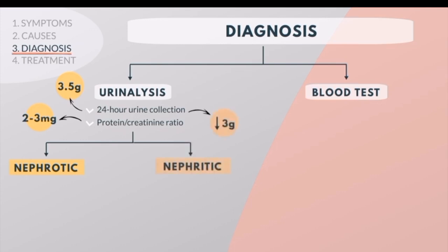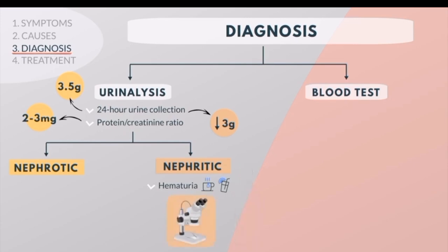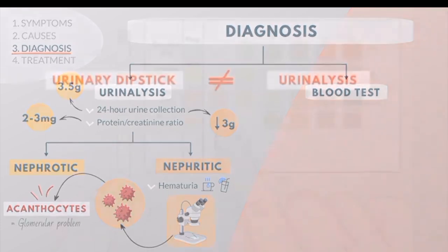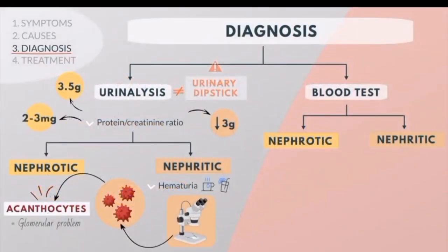Urinary protein excretion varies widely in glomerulonephritis, but is generally less than 3 g of protein. Hematuria is also present, often described as tea or cola-colored urine. Microscopic urine examination may reveal red blood cell casts that are classically dysmorphic as a result of destructive passage through the glomerulus. These are called acanthocytes, indicating glomerular nephritis as the cause of hematuria.